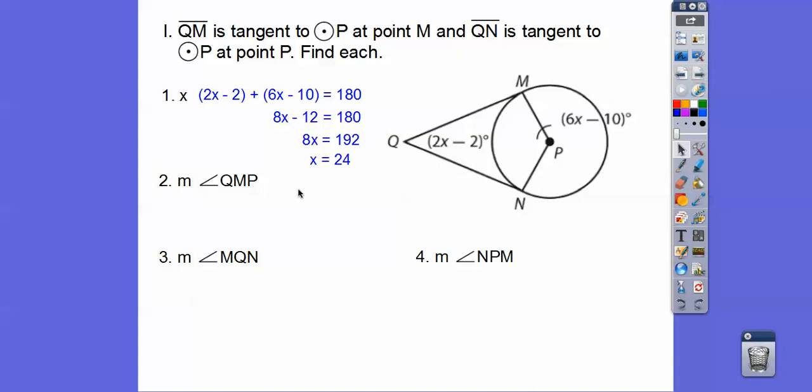All right, so angle QMP. So here's QMP. Okay, well, that's a right angle right there. So that one's going to be 90. Remember, if it's tangent, they're both right angles right there. All right, and then so let's plug in X equals 24 here and X equals 24 here. And then that's going to solve us for those angle measures. So we get 46 on this angle. And so notice this is the supplement right there. So we get 134.